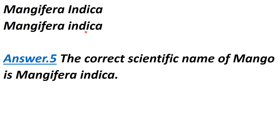Question 5: Which scientific name for mango is correct? According to nomenclature rules, the genus name's first letter should be capitalized and the species name's first letter should be lowercase. The first option is incorrect because the 'I' in 'indica' is capitalized. The second option is correct — the genus name starts with a capital 'M' and the species name 'indica' starts with a lowercase 'i'. Both names are written in italics, so that is not an issue.